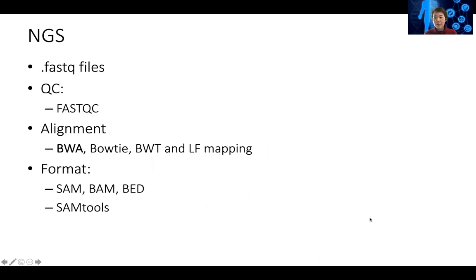We started by explaining high-throughput sequencing. Currently the technology leader is Illumina, so we only teach you how to analyze data from Illumina sequencing machines. We learned the FASTQ format, which is the raw data coming from Illumina sequencing. The very first step is quality control, and we discussed FastQC — this is applicable whether you are sequencing DNA or RNA.